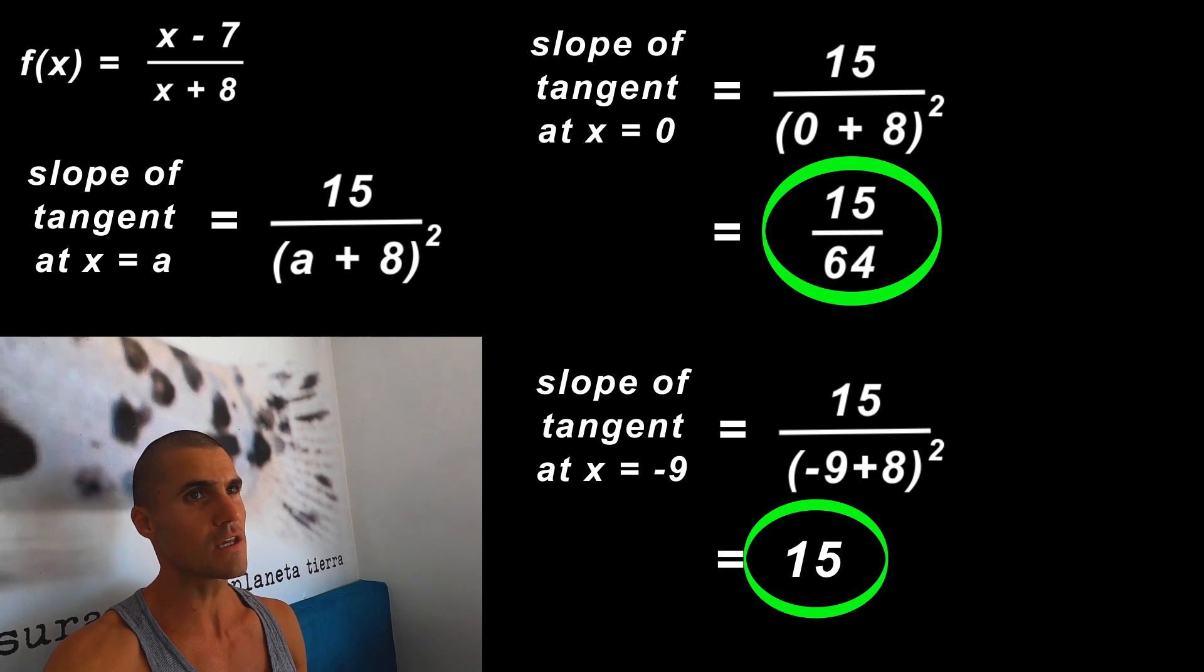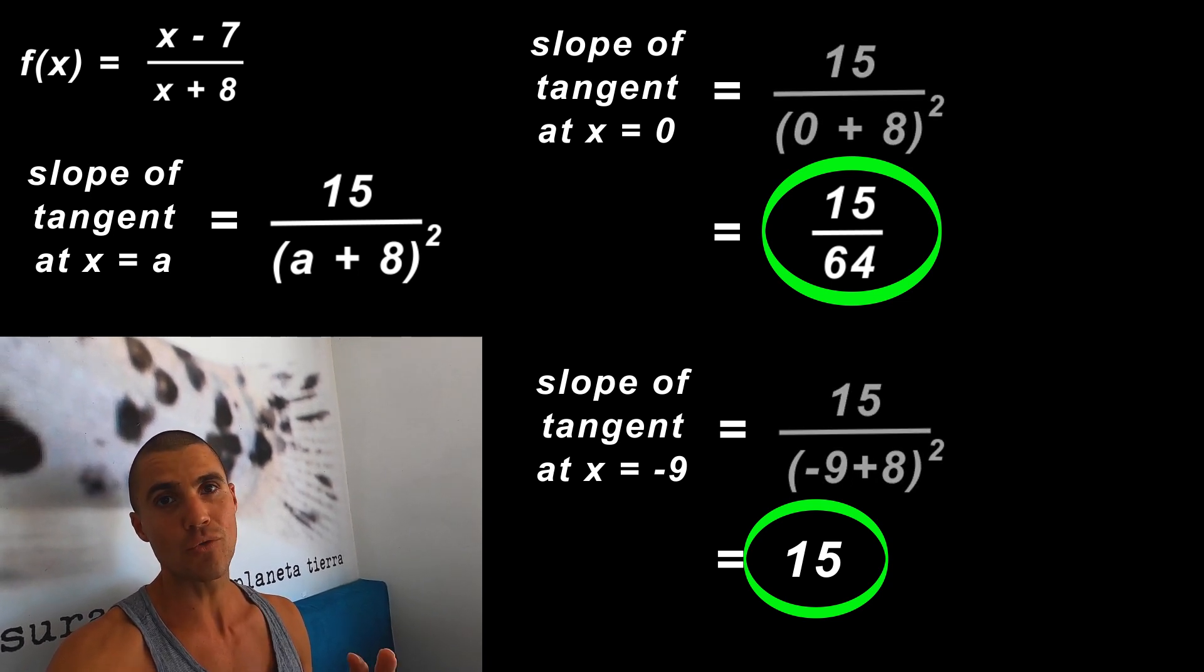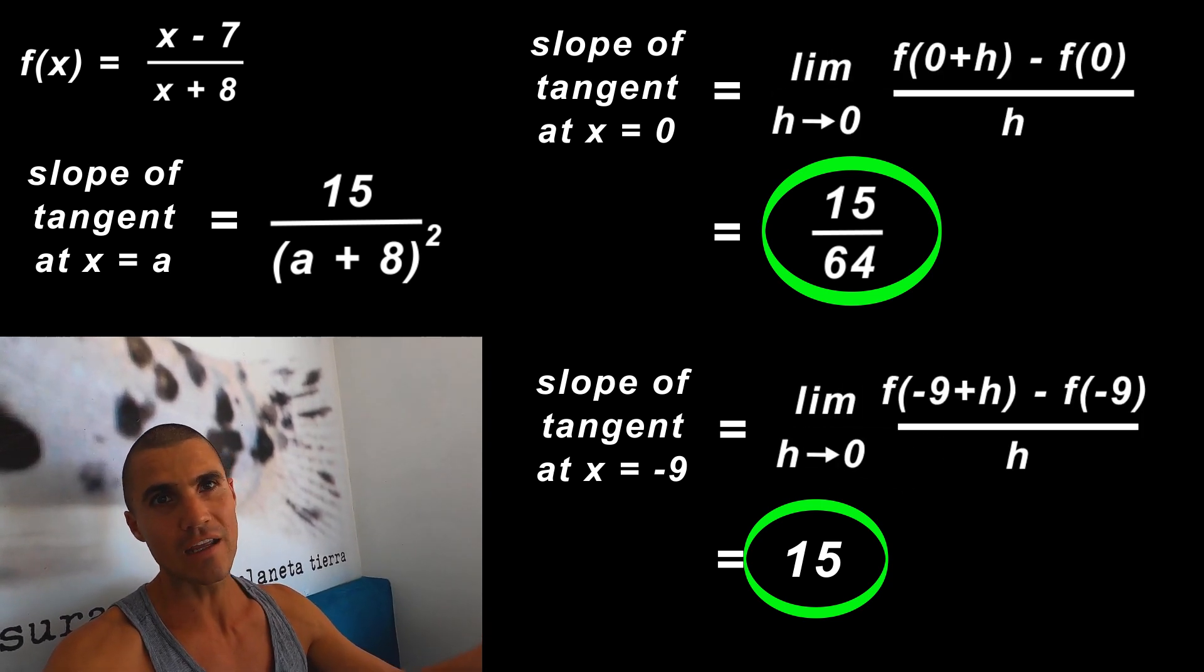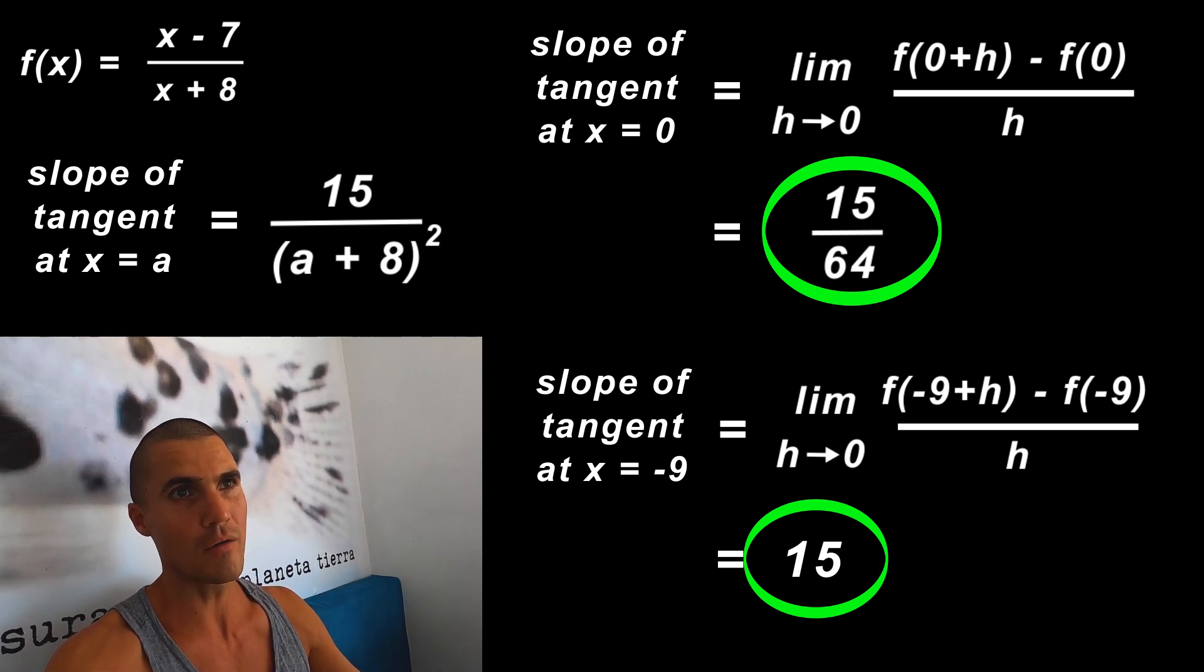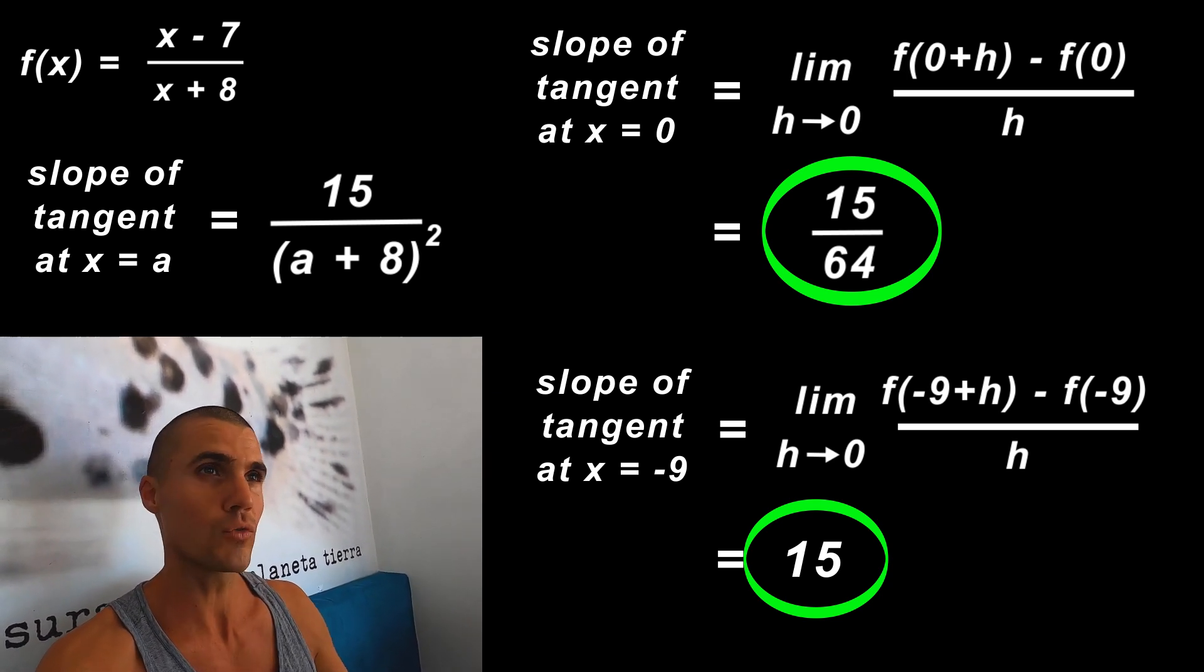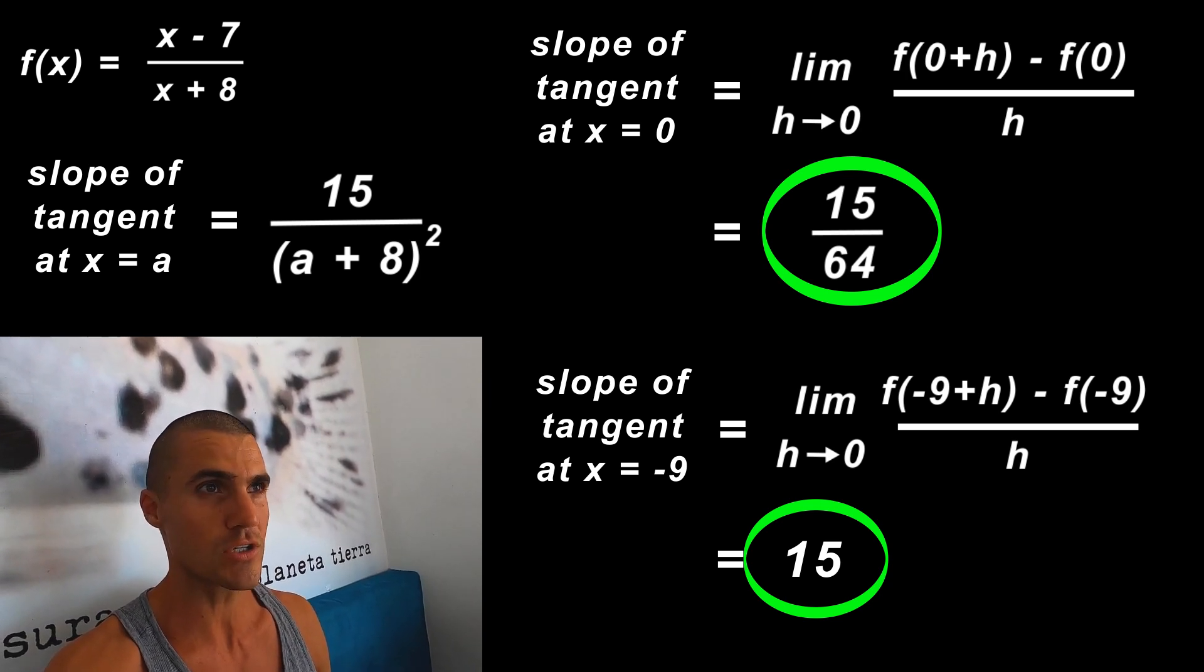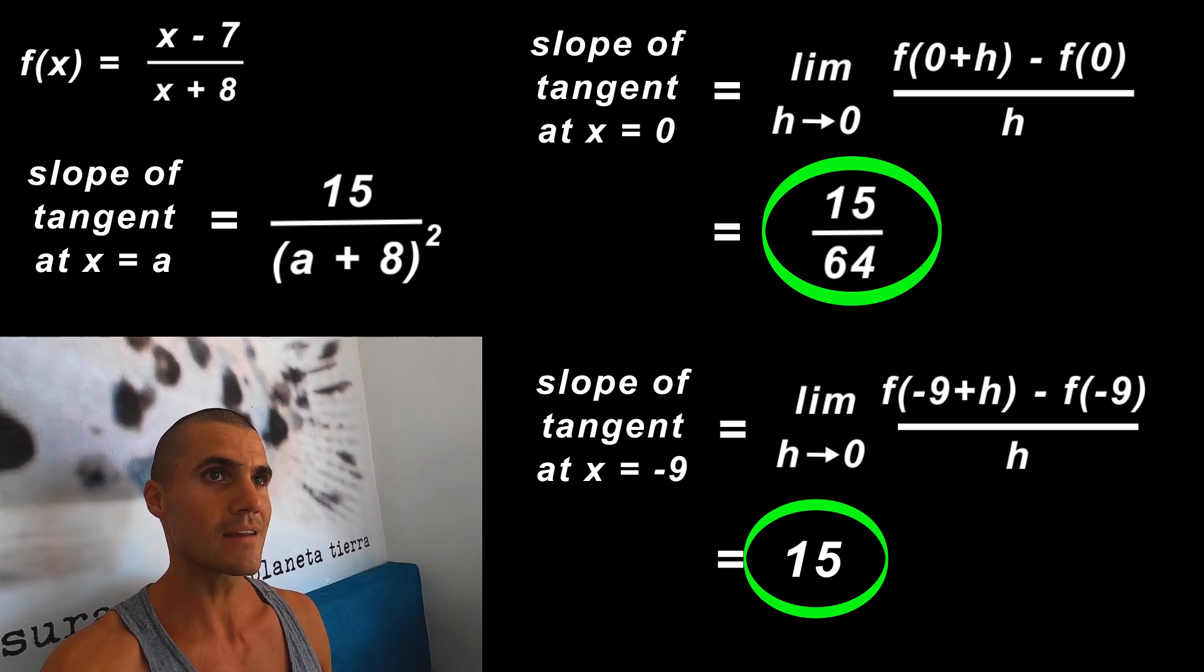If you plug in negative 9 into the expression, you'd end up with positive 15. You can get the same slopes if you plugged in the a values directly at the beginning in the difference quotient, but then you'd have to do that algebra twice. You can do it that way if you want to practice doing your algebra with these kinds of expressions. You'd get the same slopes: 15/64 and 15.